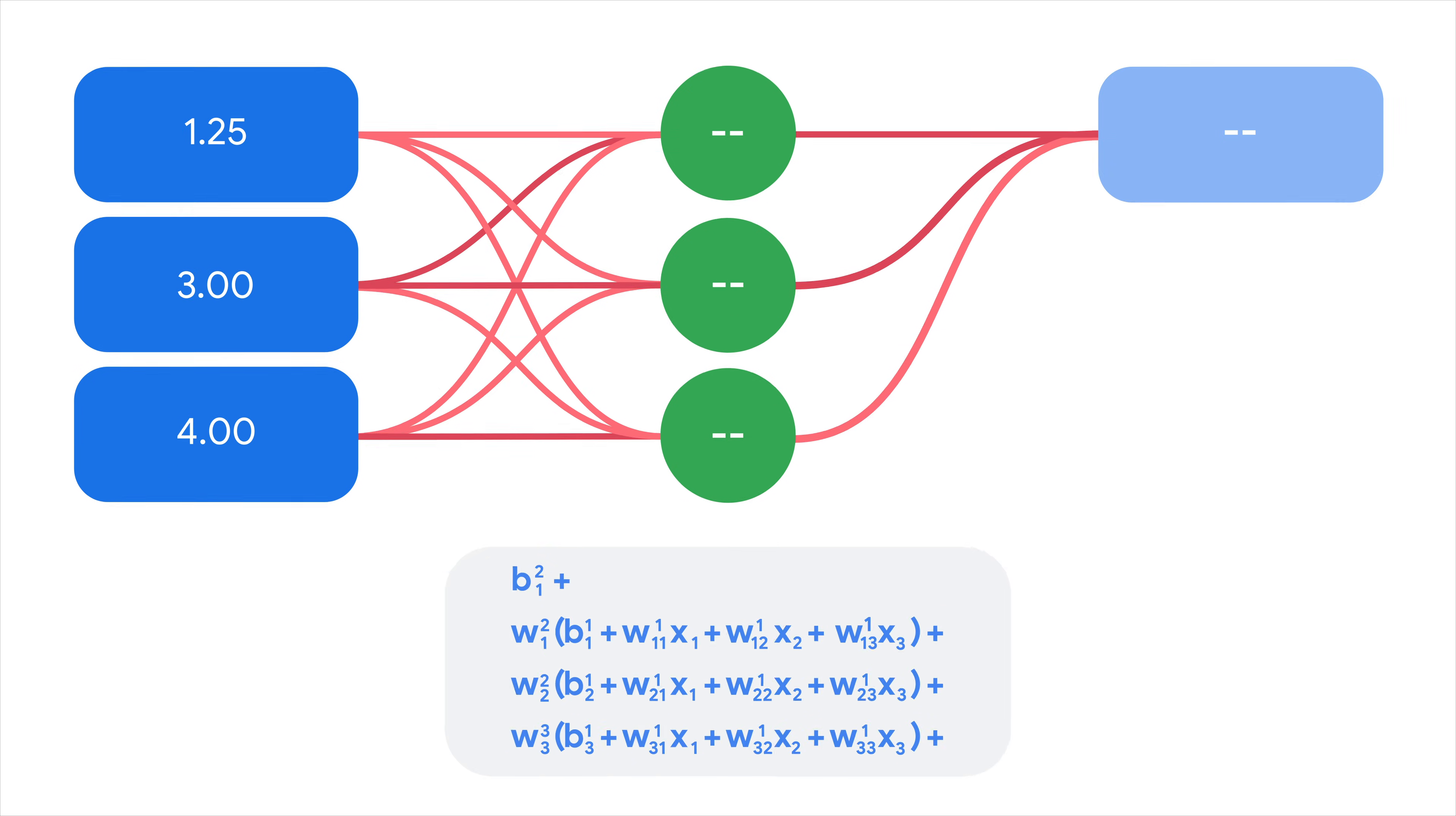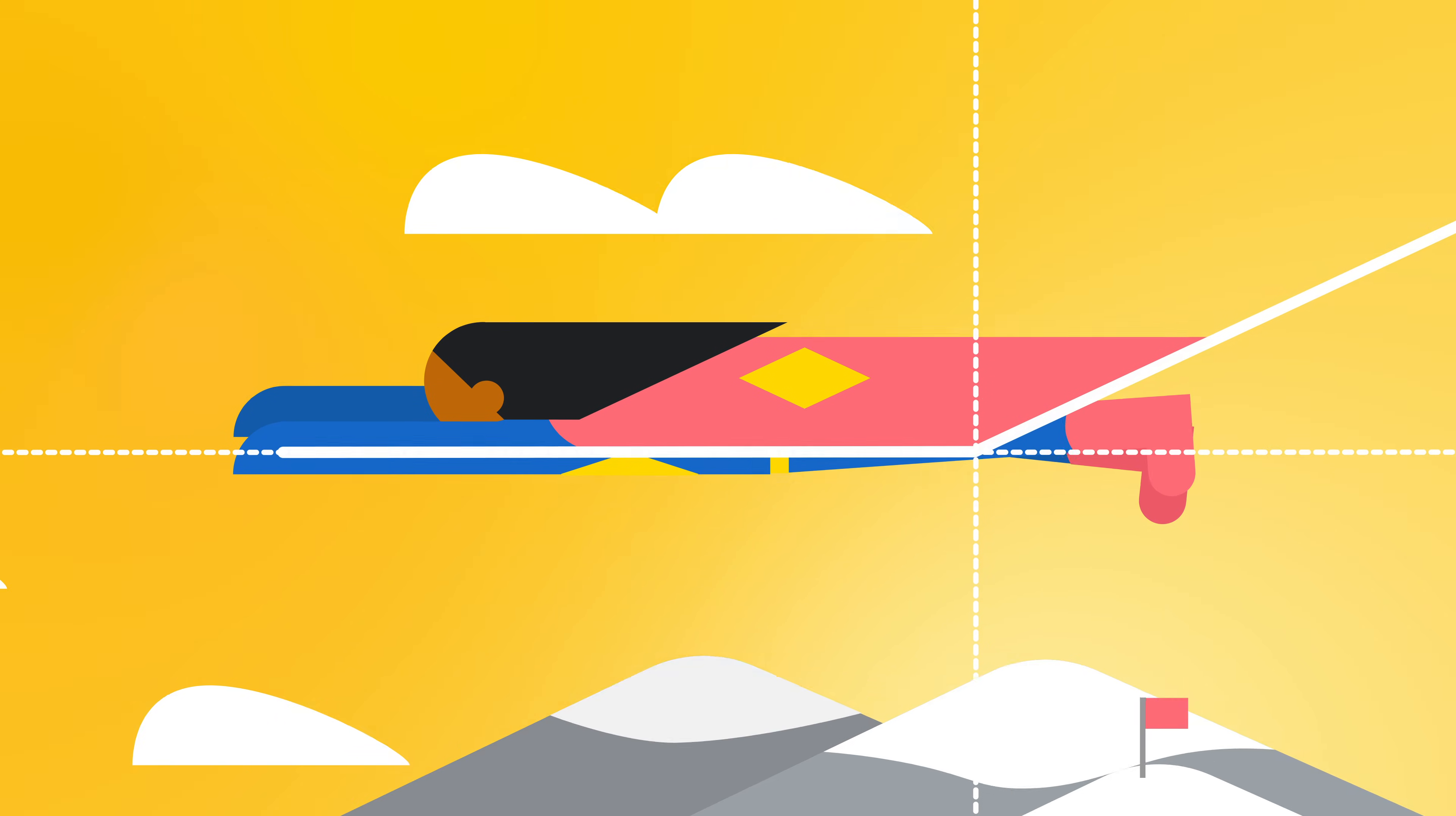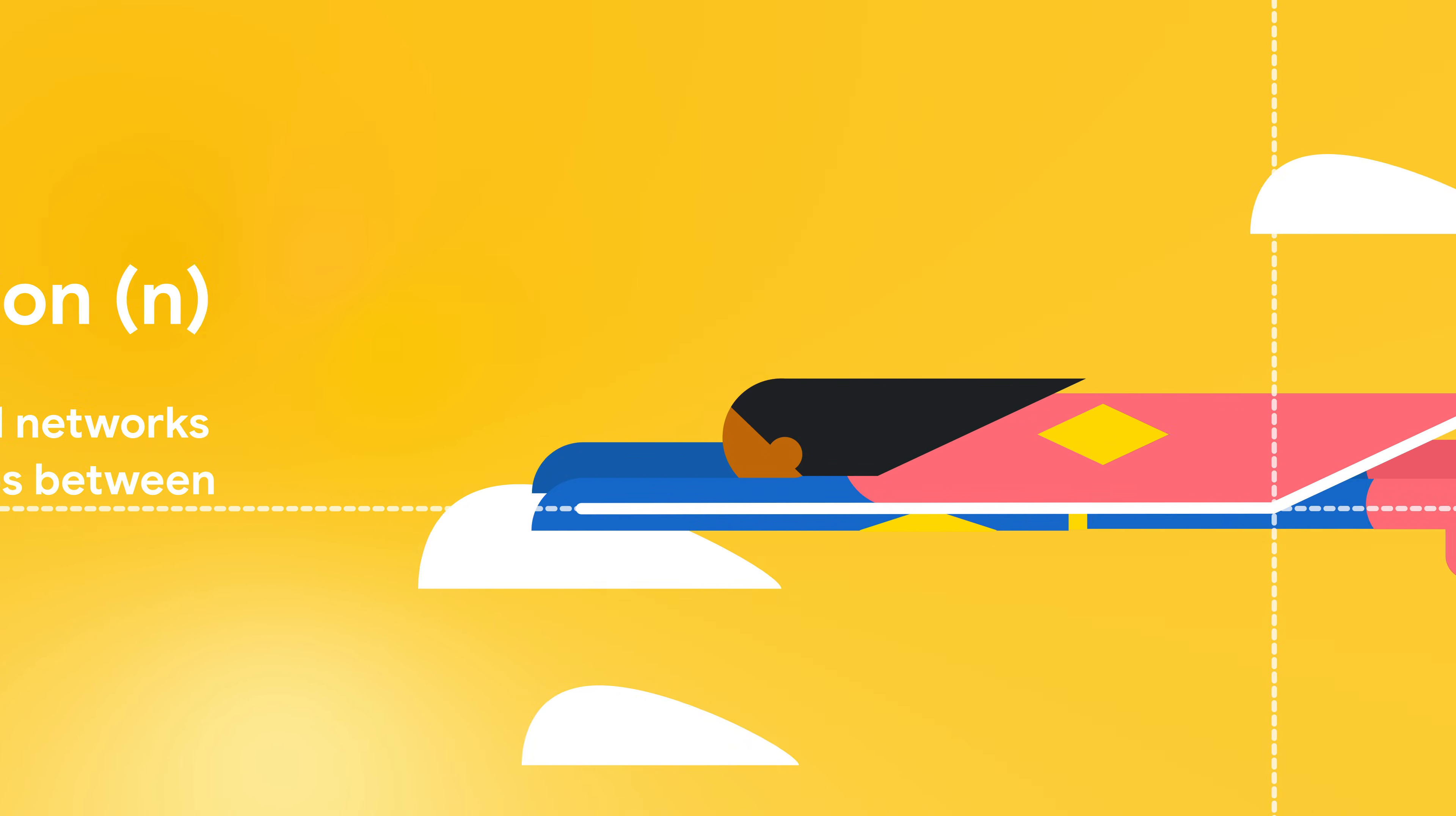Could this architecture help us learn nonlinearities? Unfortunately, looks like we still have a linear model, just a more complex one. How do we learn nonlinearities then? Neural networks solve this problem by introducing an additional calculation step when combining inputs, called an activation function.